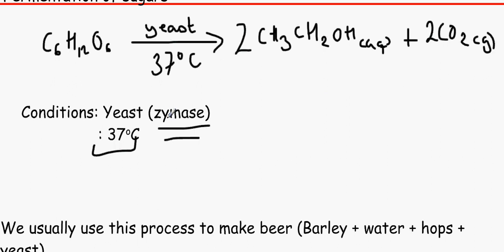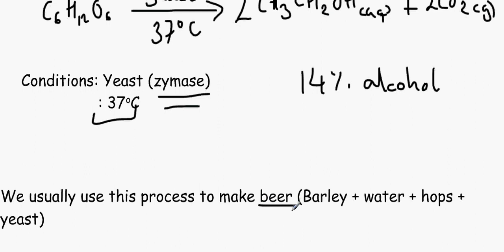So this also has a 14% alcohol concentration because that's the maximum concentration zymase can make. So we can use this to make beer which has only got a 3.5% alcohol content, which we mix barley and water and hops with the yeast.